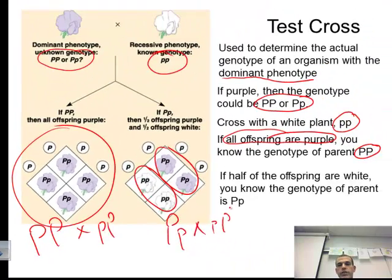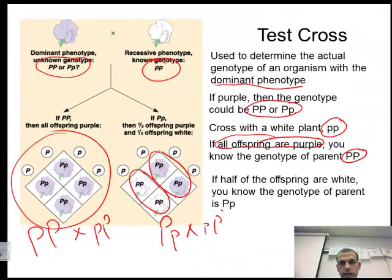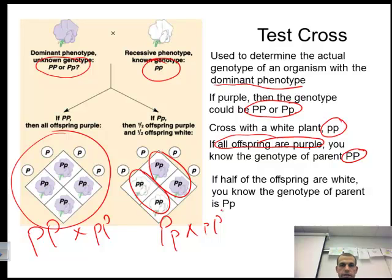In this third screencast, we looked at the law of dominance, the law of independent assortment, and the law of segregation. We did a dihybrid problem, and we talked about the test cross. This is the third screencast for the genetics unit, and we will review some of this material in class to help with your further understanding.